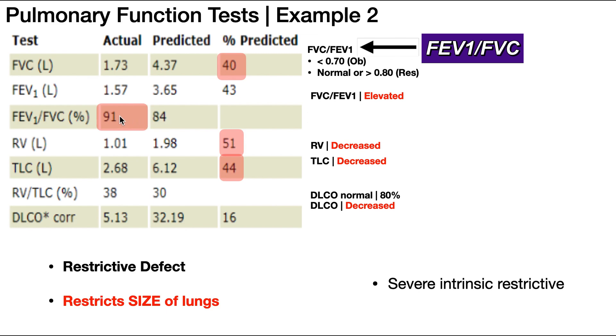Then we have RV, which is the residual volume, and TLC, which is the total lung capacity, along with the ratio of these two, which we really won't use a whole lot of.